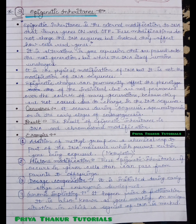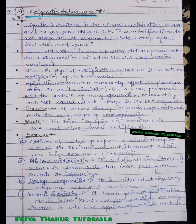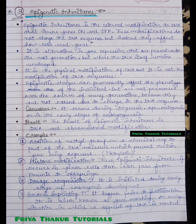The result of epigenetic inheritance is DNA and chromosomal modification. When epigenetic inheritance occurs, we can observe modifications in both chromosomes and DNA.